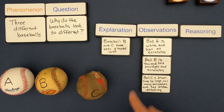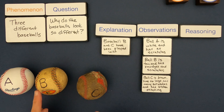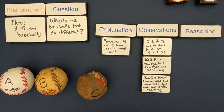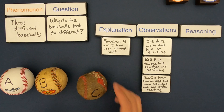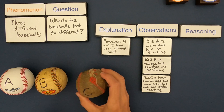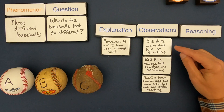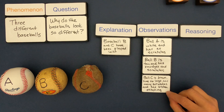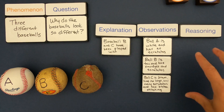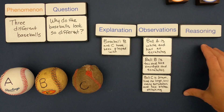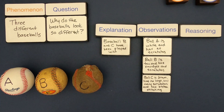My explanation is that baseballs B and C have been played with, and I'd even say that C has probably been played with even more. But for each of these observations I have to come up with reasoning, and that reasoning should connect the observations back to the explanation.